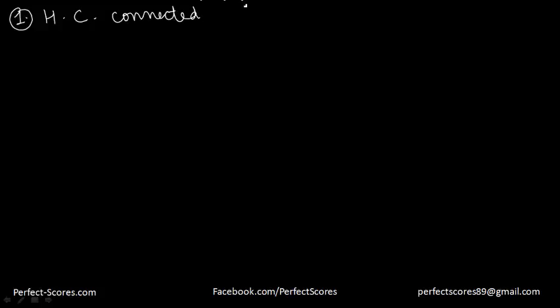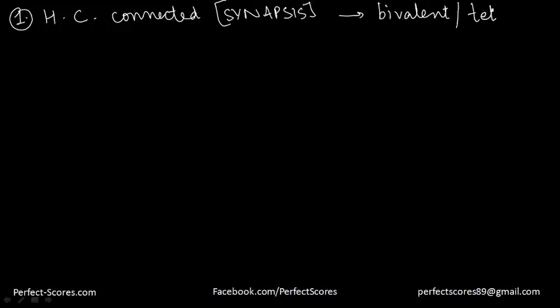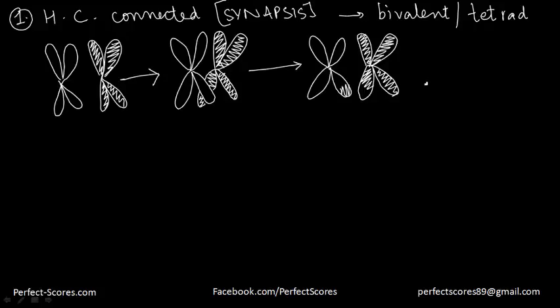Step number 1 is that the homologous chromosomes become connected — they become connected in a process known as synapsis. This gives rise to a bivalent, or tetrad. So these are the homologous chromosomes — a pair of homologous chromosomes — and when crossing over is happening, they become connected through synapsis, giving rise to a bivalent, meaning it has two chromosomes.